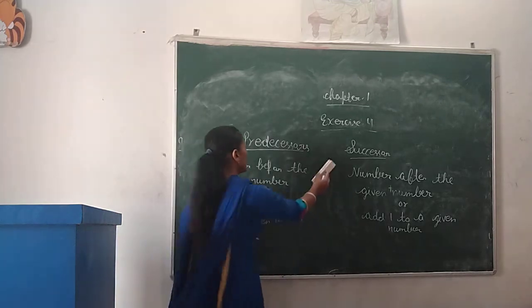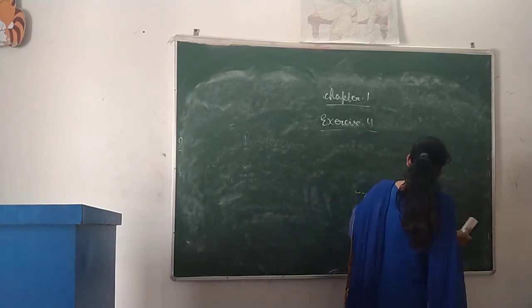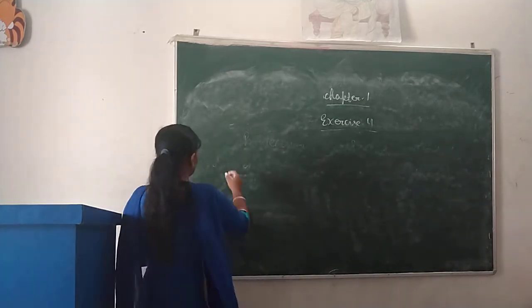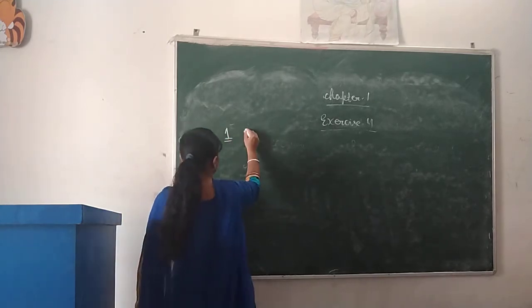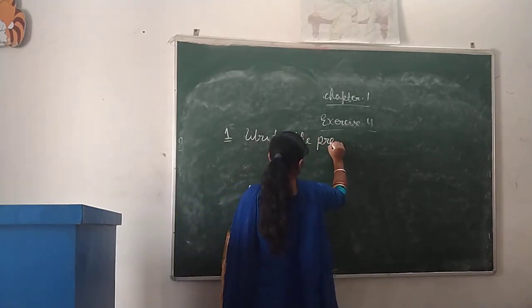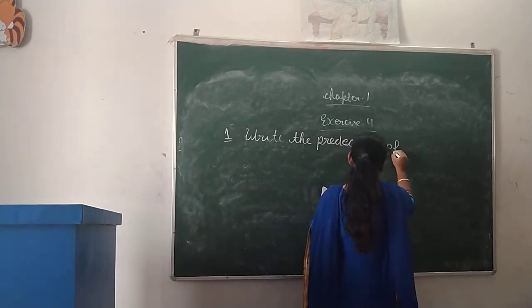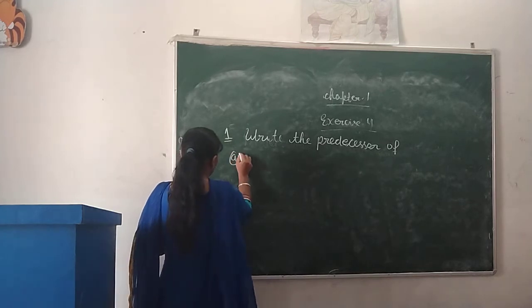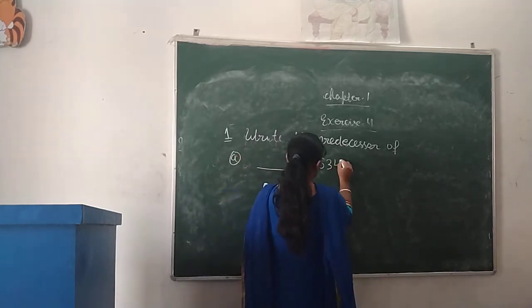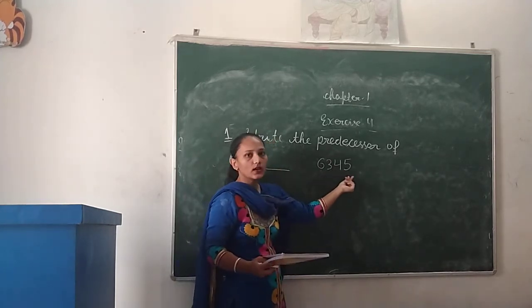So now we are going to start the exercise. First question is: write the predecessor. Part A is 6,345. The number before 6,345 is 6,344.